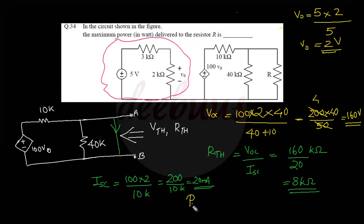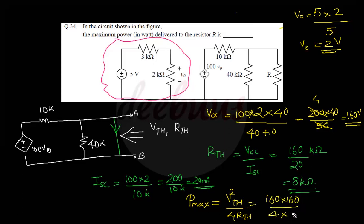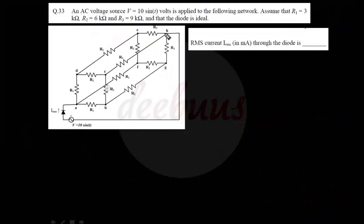Maximum power delivered is V_th²/(4R_th) = 160² / (4 × 8k) = 25600/32000 = 0.8 W. So 0.8 watt is the final answer.